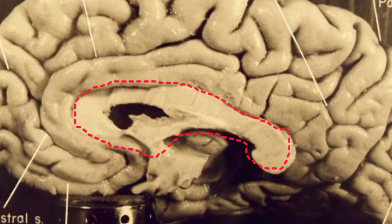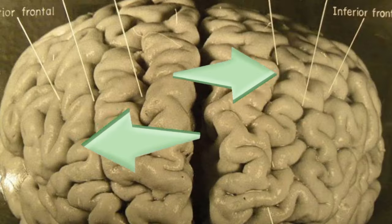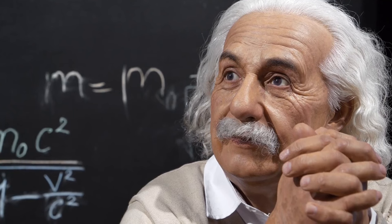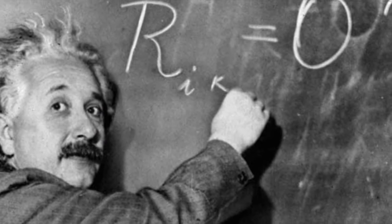Einstein's corpus callosum was also bigger than most people's, so there was a strong link between his left and right brains. Einstein was able to imagine difficult events and problems because of this.